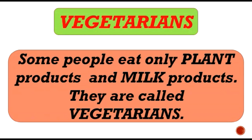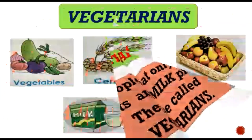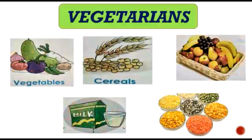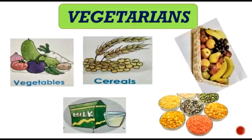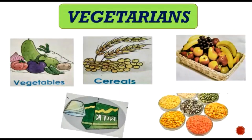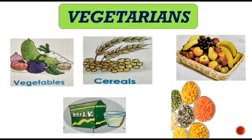And what about milk products? Milk products include curd, butter, cheese, paneer, cream, and so on. So people who are vegetarian eat vegetables, cereals, fruits, milk products, and pulses.